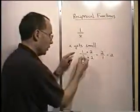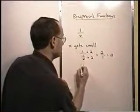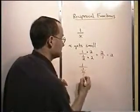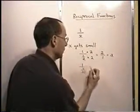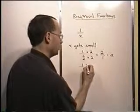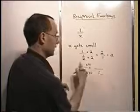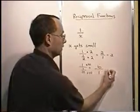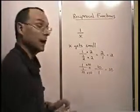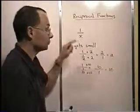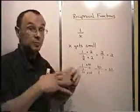What if we make x a little bit smaller, maybe something like 1 tenth? So we have 1 over 1 tenth. We multiply the top and bottom by 10, and we get a 1 on the bottom and a 10 on the top — we're getting a bigger number. So the rule is: as x gets progressively smaller, 1 over x gets progressively larger.